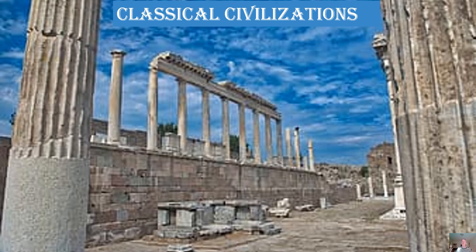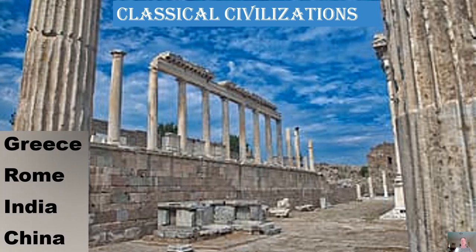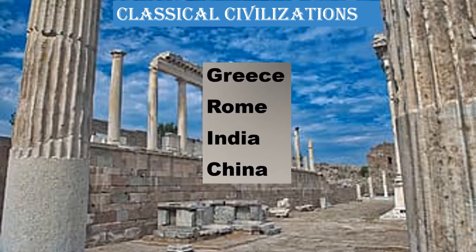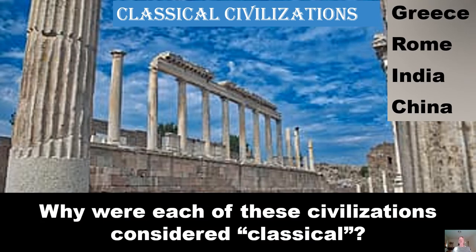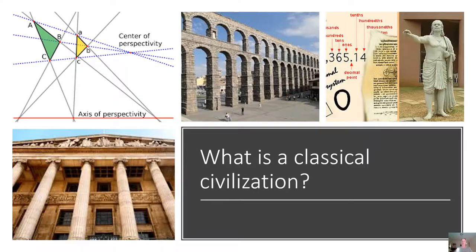This video is going to give you a brief overview of classical civilization. The four classical civilizations we're going to quickly touch upon are Greece, Rome, India, and China. By the end of this video, you should be able to answer the question: why were each of these civilizations considered classical? A classical civilization is a place that had cultural advancements beyond other areas during that time period. They often leave behind traditions and knowledge that still affect us today.